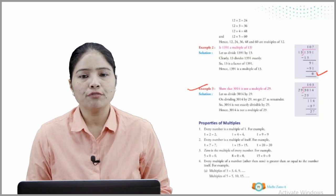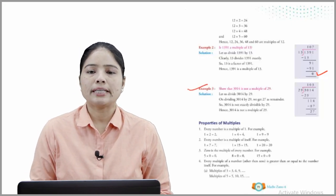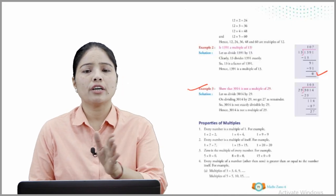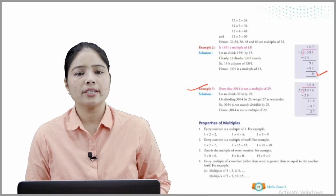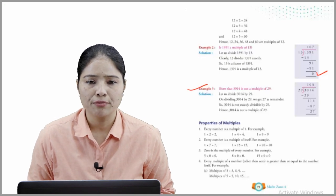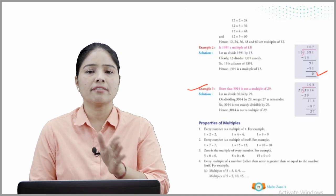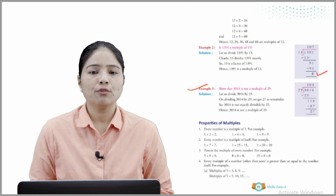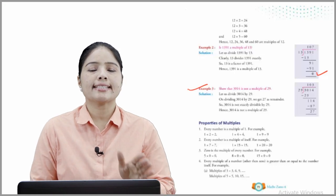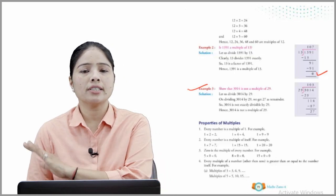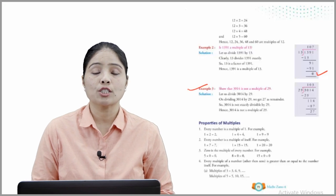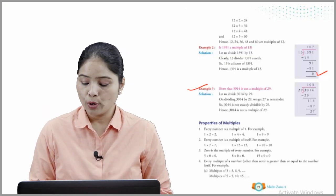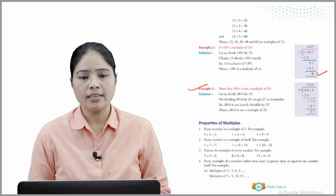Example 3: Show that 3014 is not a multiple of 29. Solution: Let's divide 3014 by 29. On dividing 3014 by 29, we get 27 as remainder. So 3014 is not exactly divisible by 29. Hence, 3014 is not a multiple of 29. I hope you understood all the examples very well.